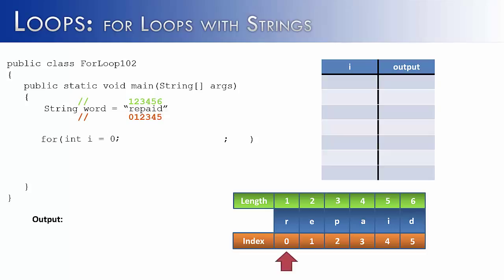To write this for loop, we start at zero because that is the index of the first letter. We end at the length of the word — using word.length rather than a constant like five, giving flexibility to change the word later. We count up by ones to visit each individual index. Inside the loop, we print out word.charAt(i), and i moves as the loop iterates.